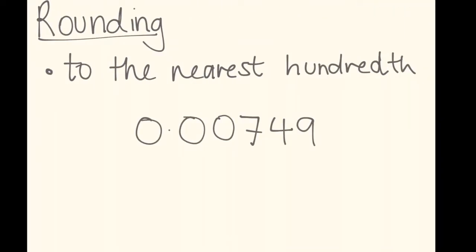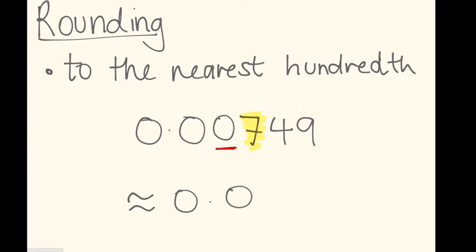You might get a question asking you to round to the nearest hundredth. Again, we need to underline which number is in the hundredths place. And here I've got a zero in the hundredths. Then you look at the number next door and you can highlight that. So here I've got a zero in the hundredths place and a seven next door in the thousandths place. So is it five or more? Yes, it is. So five or more, add one more. This is going to be 0.01.